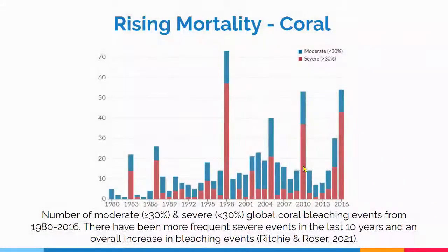Corals are also indirectly impacted by global warming, as heat waves are causing mass bleaching events. As shown here, moderate and severe bleaching events are becoming more frequent. This is occurring in large part because the global ocean temperature has risen by more than 1.3 degrees Fahrenheit since the late 19th century. Although some coral reefs have recovered from coral bleaching events, the majority have not, and bleaching ultimately leads to mortality.